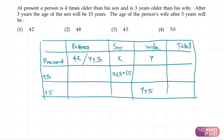From x plus 3 equals 15, we get x equals 12. So 4x equals 48, meaning the father's present age is 48. Since the father's age is y plus 3, y equals 45. Therefore the wife's age after 5 years is y plus 5 equals 50. The answer is option 4.